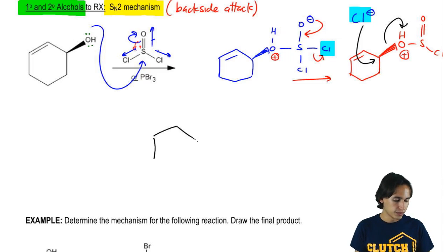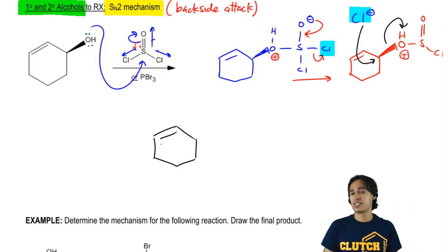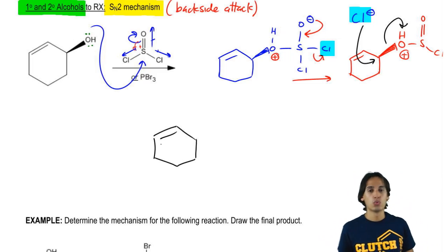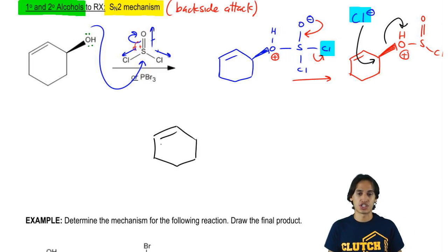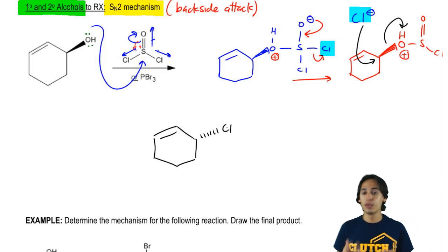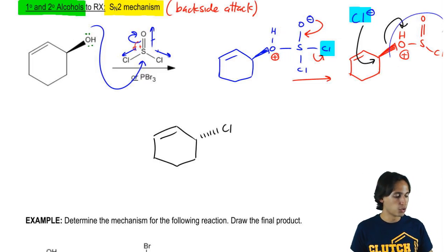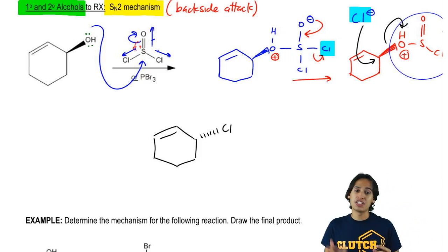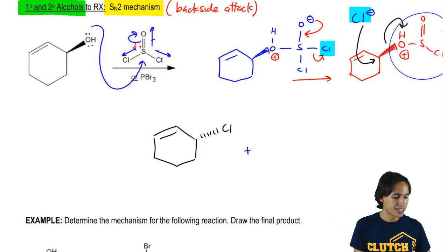Now I'm going to get the Cl attacking that carbon and kicking out this entire thing as the leaving group. So what I wind up getting is an alkyl halide – in this case, it's an alkyl chloride – where my chlorine should be facing which direction? It needs to be on the dash. The reason is because notice that my leaving group was on the wedge before. So after I did a backside attack, I need to invert the stereochemistry. I'm going to get that plus I'm going to get my leaving group, which just looks like this. Cl on one side and OH on the other.